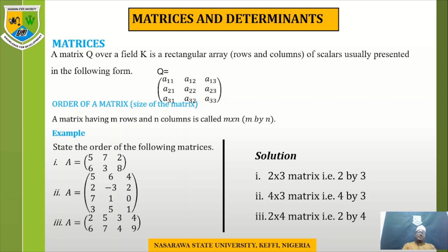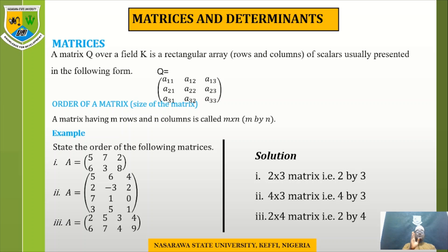For the last example, we have two rows and four columns, so the order of that matrix is 2 by 4. One important thing to note: to get the order of a matrix, you first calculate the total number of rows before the total number of columns. If mistakenly you say column then row, you are wrong. For example, if the order is 2 by 3, saying 3 by 2 is incorrect. You must always state rows first, then columns.